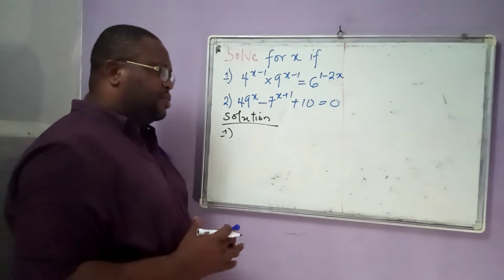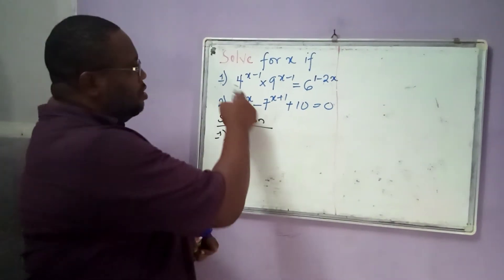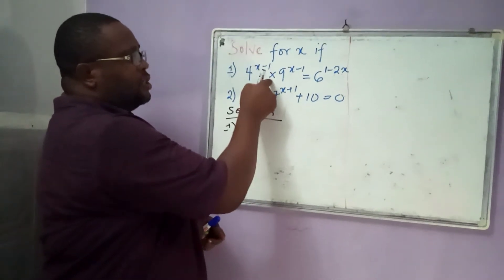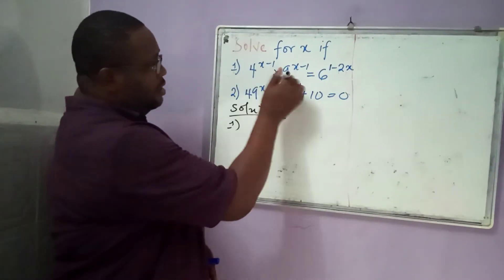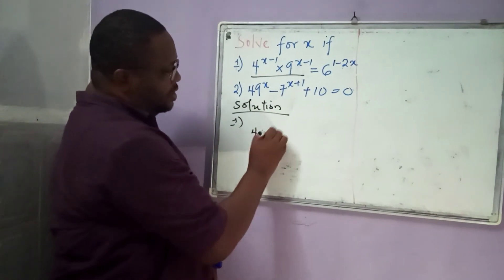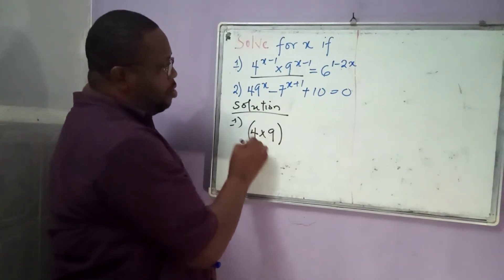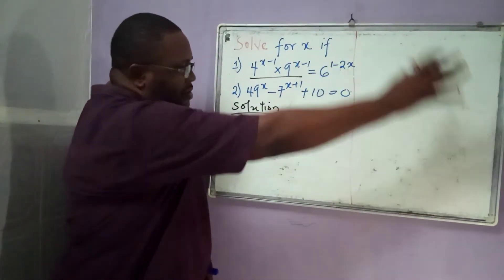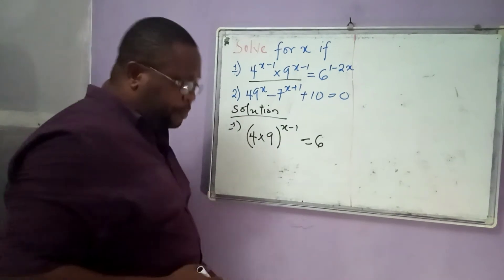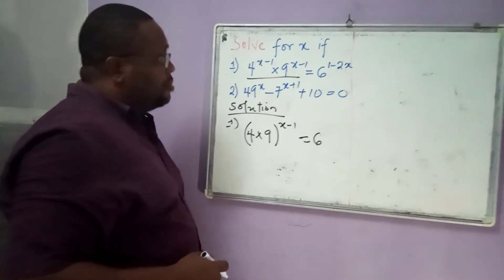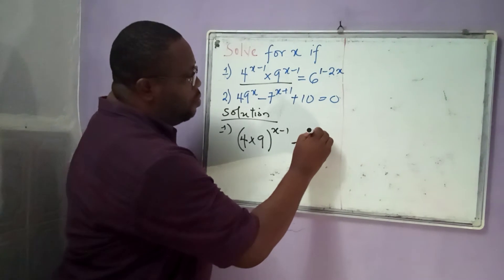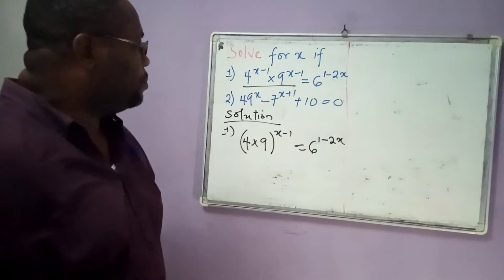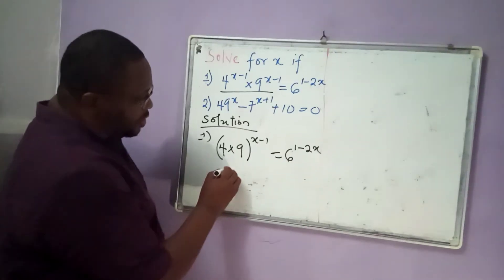The very first thing I am going to do, from the first law — the law of multiplication — we have 4 times 9. You can see this is multiplication. So this simply becomes 4 times 9, and we now give them a common exponent raised to the power x minus 1. This becomes equal to the right-hand side, which is equal to 6 to the power 1 minus 2x. Now 4 times 9 is equal to 36.